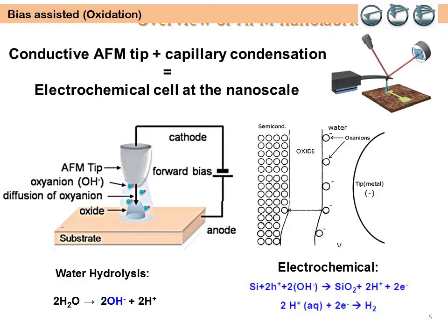Oxidative bias-assisted methods basically rely on the formation of a nano-sized electrochemical cell. In a humid environment, thanks to capillary condensation, a water meniscus is formed at the tip-sample contact point. The water meniscus is stable and once the tip is negatively biased, it becomes the source of ionic oxidizing species, able to migrate and grow oxide on target surfaces.